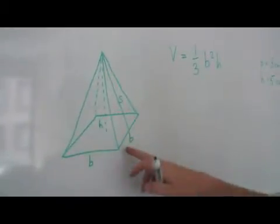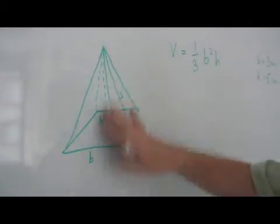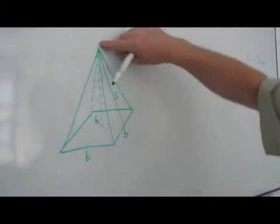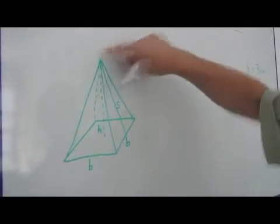Here is our square pyramid. As you can see, the base is square, that's why it's called a square pyramid. And it has four triangular sides coming to a point at the top here, the vertex.